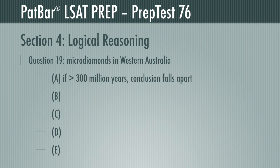If we assume A to be false—that the Earth's crust did take longer to form than 300 million years—then the conclusion that the discovery sheds light on its formation falls apart. This must therefore be true, and A is correct.